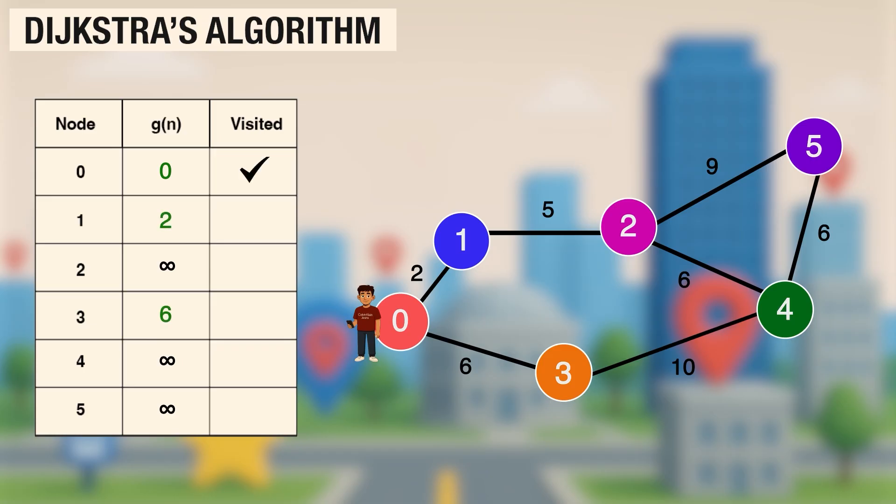Now, we pick the not yet visited node with the smallest cost, that is node 1, which has a cost 2. From node 1, we can go to node 2 by adding 5, so node 2 becomes 7. The next smallest is node 3 with cost 6, so we visit it. From node 3, going to node 4 adds 10, so node 4 becomes 16. We visit node 2, which has a cost 7. From 2, we can go to node 5 for 7 plus 9, that is 16, and to node 4 for 7 plus 6, that is 13. 13 is better than 16, so we update node 4 to 13.